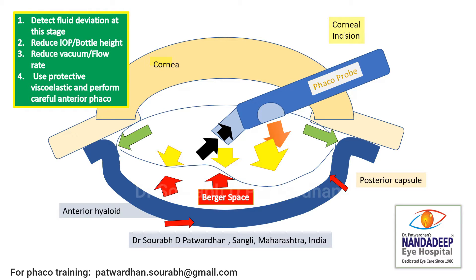You can use reduced bottle height. Also reduce the vacuum and flow rate so that the anterior hyloid fluid becomes more stable. Use protective viscoelastic and perform very careful, slightly anterior plane FECO to avoid rupture of the posterior capsule.